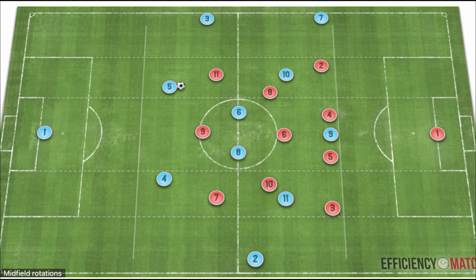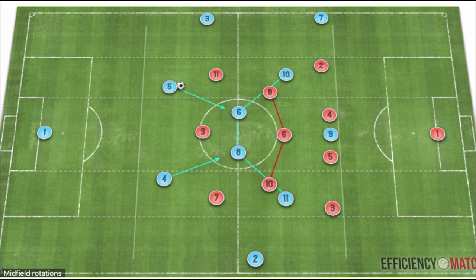We can rotate and shift to create a numerical advantage of four versus three by going with a double pivot, coming off the wing and inverting. With a double pivot and two central defenders, the connections are shorter but still strong. We have presence in both half-spaces — a four versus three — and can create a free man through the center or force the defense to become more compact.